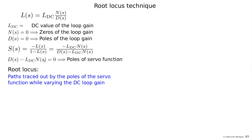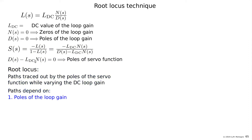If we change the DC loop gain L_DC, the solutions will change, and those solutions — the poles — trace paths in the complex plane. These paths depend on three terms in the expression: the poles of the loop gain set by D(s), the zeros of the loop gain set by the numerator polynomial N(s), and of course the DC loop gain.